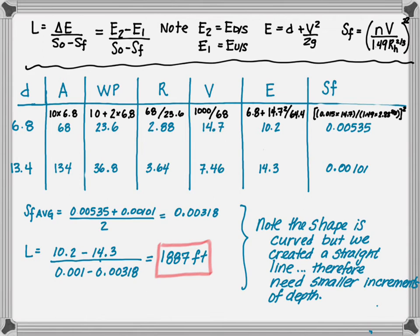So please note, as I mentioned in the prior video, the shape is curved, but we just created a straight line. Therefore, if we create smaller increments, we'll get a better estimate of the total length. So let's try it.